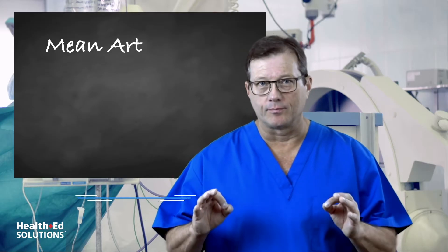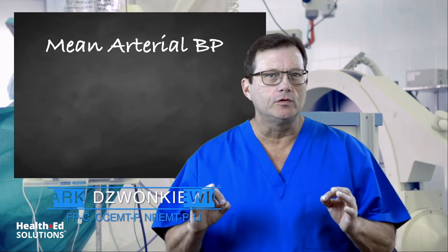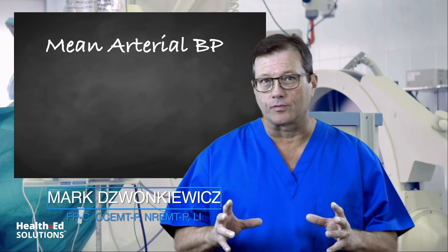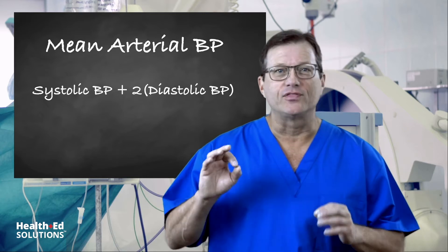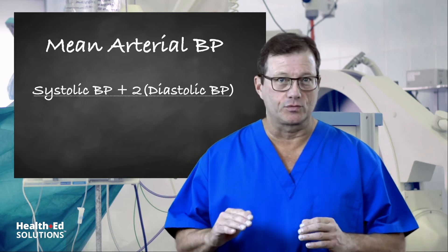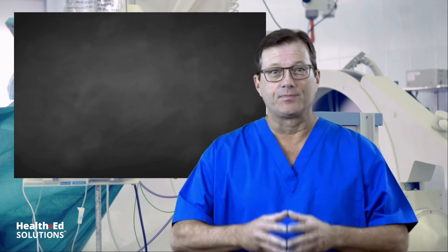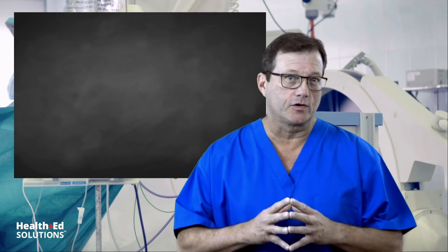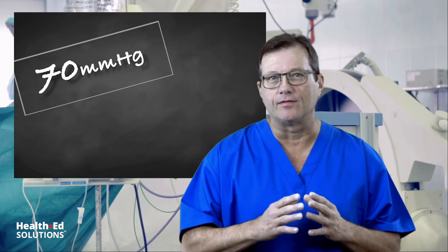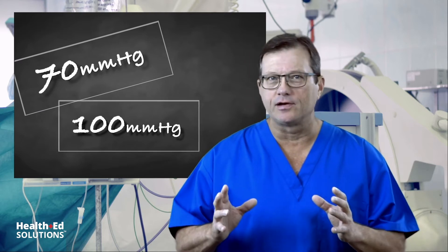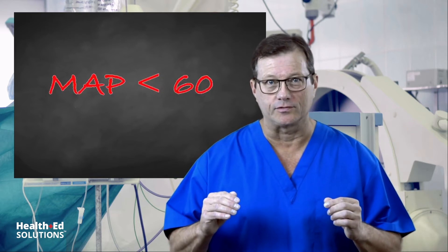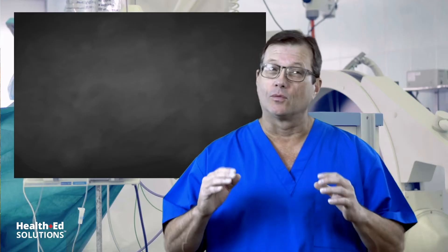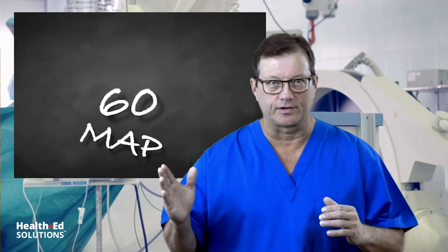Mean arterial blood pressure. The formula we use to calculate a mean arterial blood pressure is systolic blood pressure plus two times the diastolic blood pressure, divided by three. Most people consider a normal mean arterial blood pressure to be between 70 and 100. This is going to vary depending on the literature you read. However, everyone considers a mean arterial blood pressure below 60 to be dangerous, so we want to see a mean arterial blood pressure above 60.